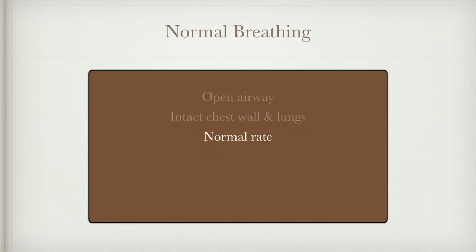We need to be breathing at a normal rate. Normal respiratory rate is 10 to 12 breaths per minute. If it's less than 8 or more than 30, we're going to go ahead and ventilate the patient. If it's less than 8, it's just too slow. If it's greater than 30, it's typically too shallow. We need to see chest rise — we expect to see chest rise and fall, and if you don't see that, you might need to be ventilating your patient.